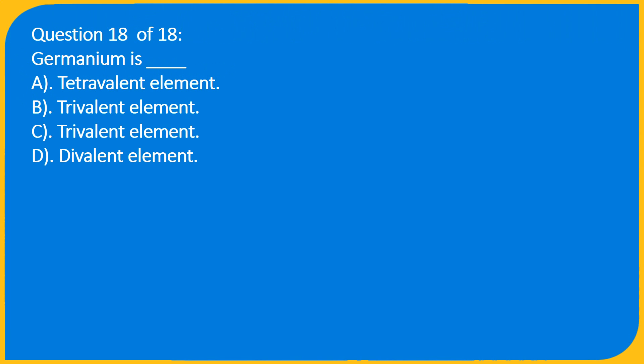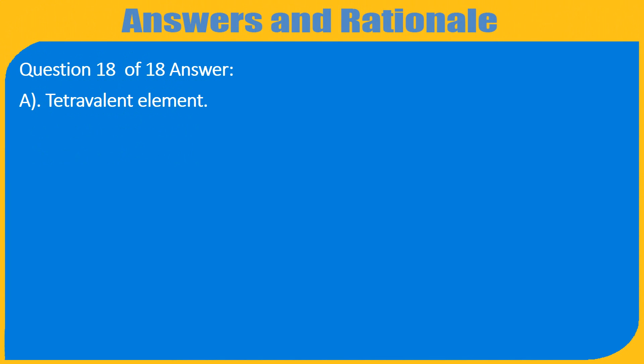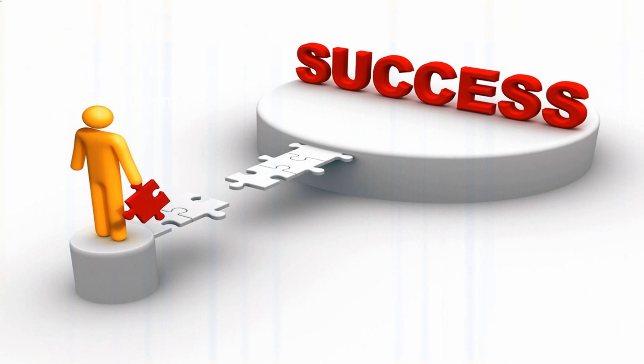Question 18 of 18: Germanium is underscore: A. Tetravalent element, B. Trivalent element, C. Trivalent element, D. Divalent element. Question 18 of 18 Answer: A. Tetravalent element.